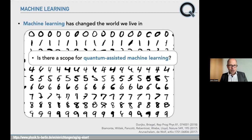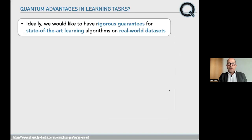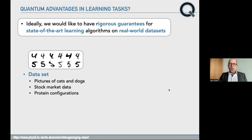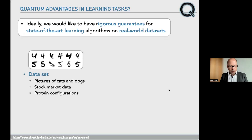Given the importance of machine learning and its ubiquitousness in modern life, it makes a lot of sense to ask in what way quantum machines and quantum algorithms could possibly help in solving meaningful machine learning tasks. Is there scope for quantum-assisted machine learning? That's surely an interesting question — in fact, it's more than one question, it's a bouquet of questions. Ideally, we would like a rigorous guarantee from a mathematical mindset — a guarantee for state-of-the-art algorithms learning on real-world datasets like pictures of cats and dogs, stock market data, or protein configurations.